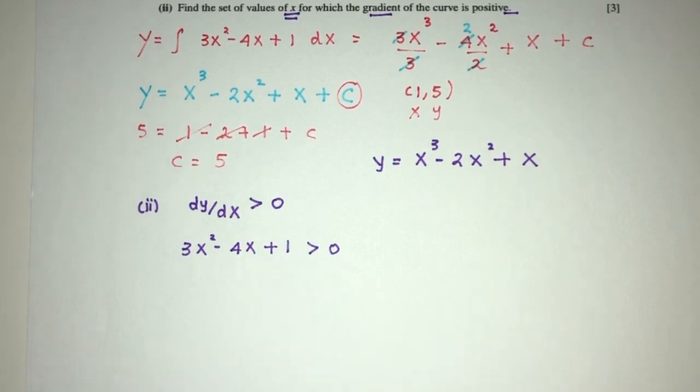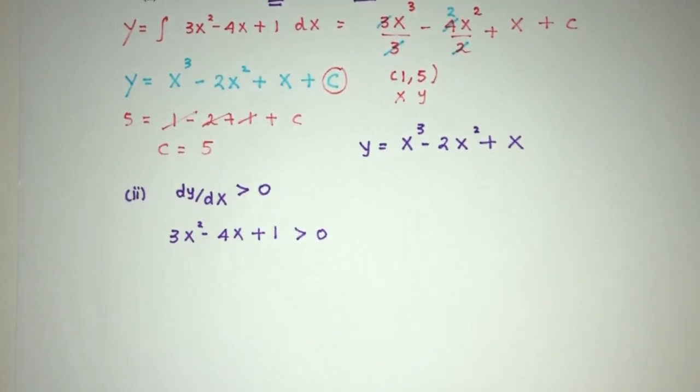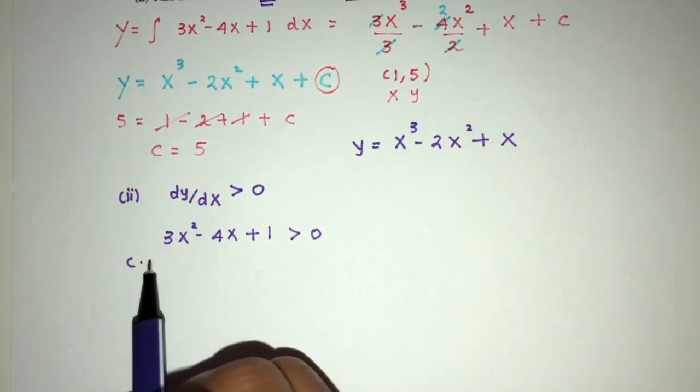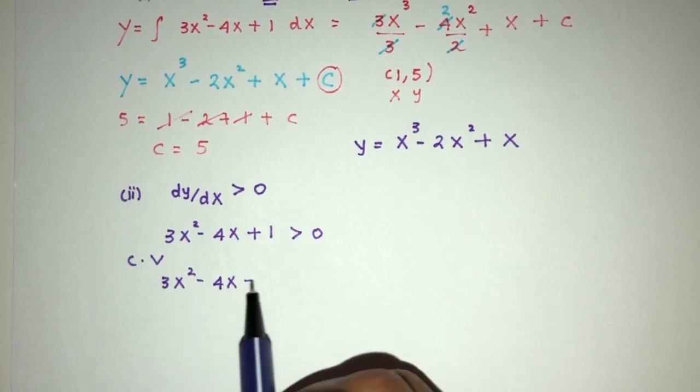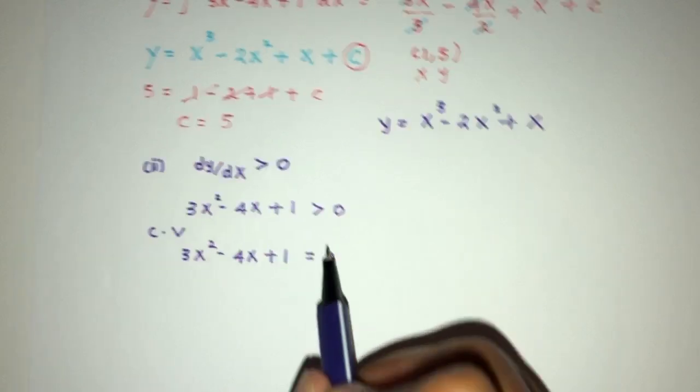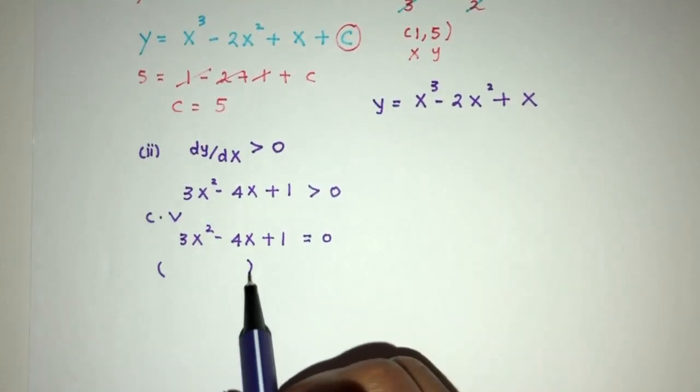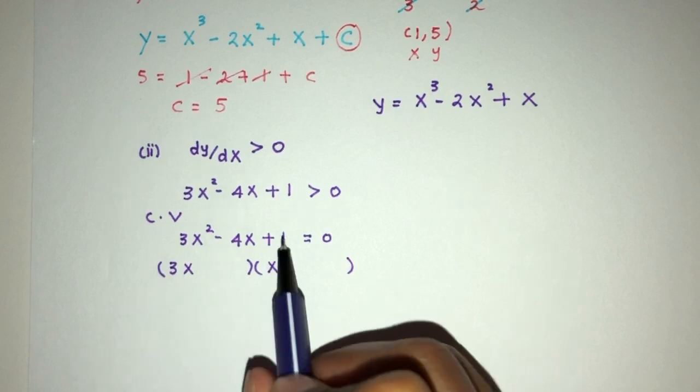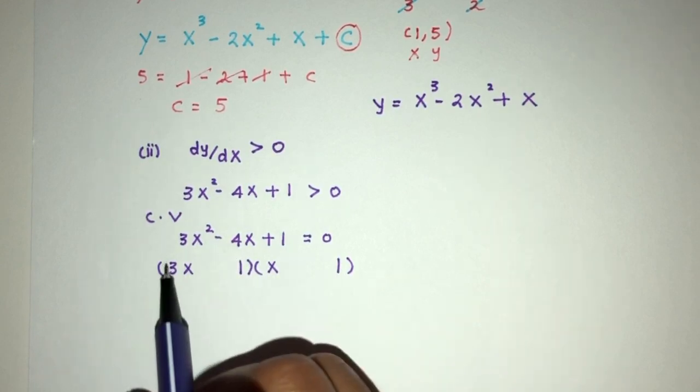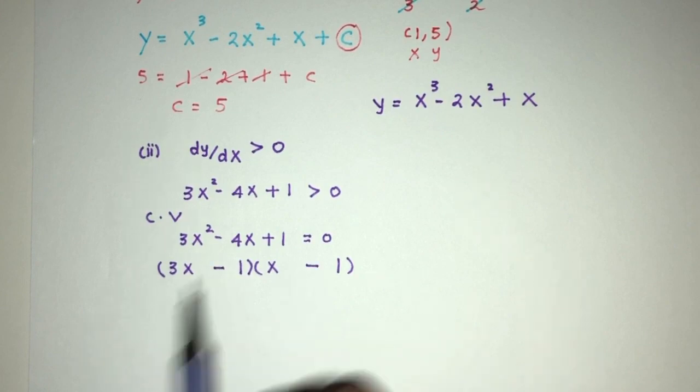We know the value of this is given: 3x squared minus 4x plus 1 is more than 0. For this kind of equation, we have seen this many times in AdMath, we have to first find the critical values. So let's equate that equation to the value of 0. We have to factorize.